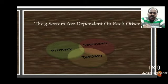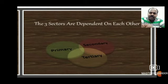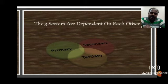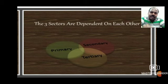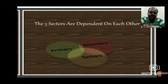For example, take agriculture — the primary sector. Farmers produce sugarcane, but if the people working in the sugar mill are not ready to take the sugarcane, what will the farmers do with it? And if farmers cultivate crops and other things, but the traders and transporters are not ready to take them to the market, we can see how the primary sector is depending on the other two sectors.